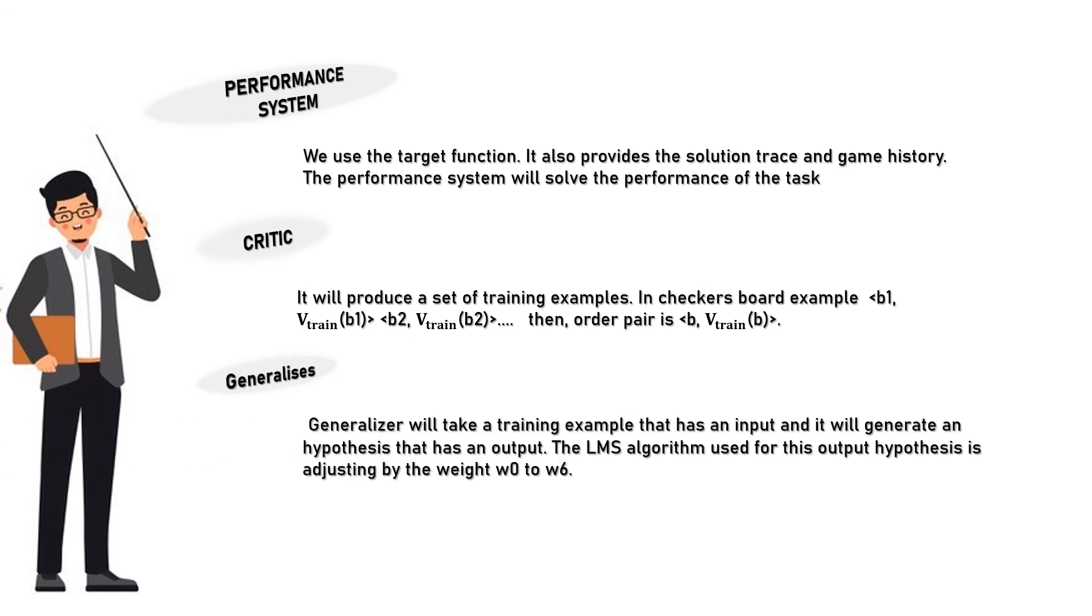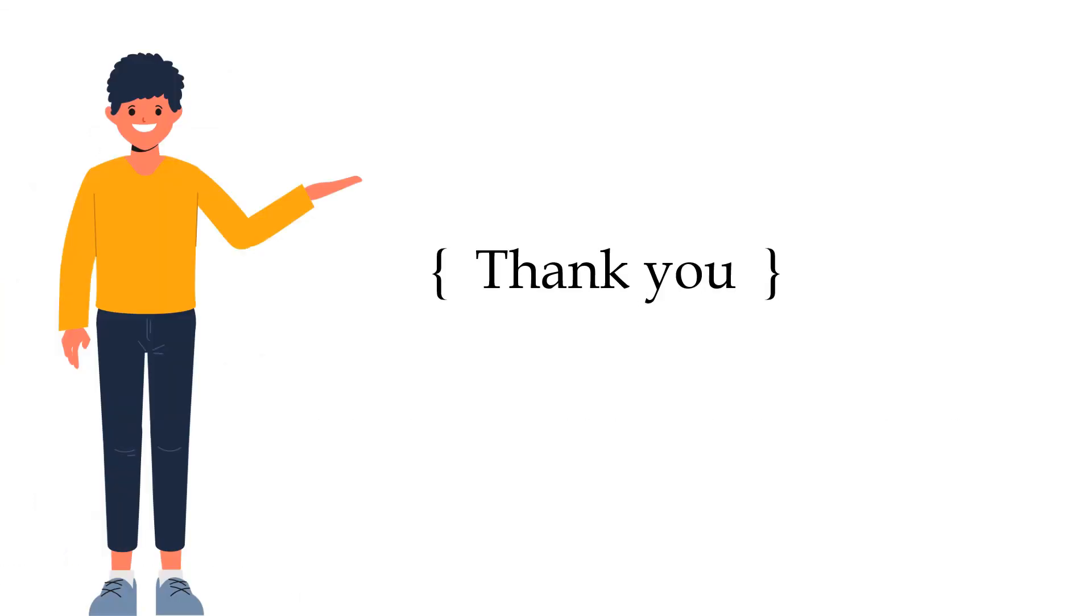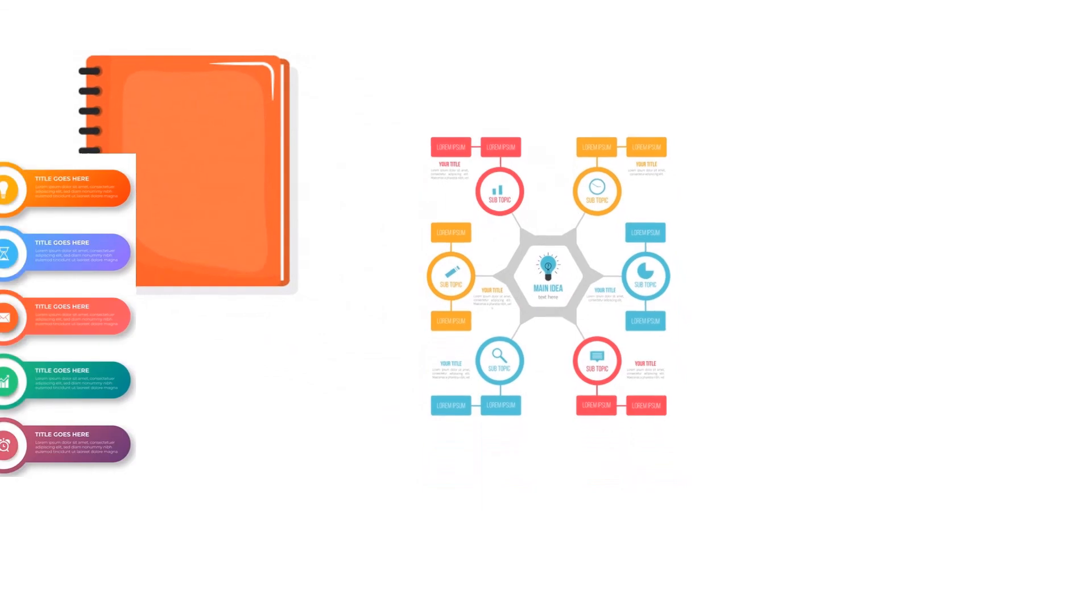The LMS algorithm used for this output hypothesis is adjusting by the weights w0 to w6. Experiment generator will take this current hypothesis as an output and it produces a new problem as an output.